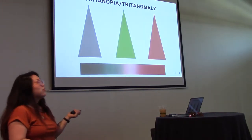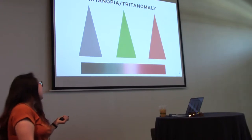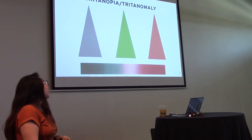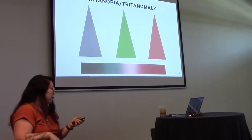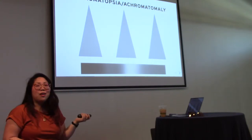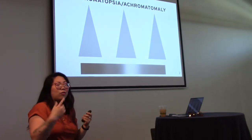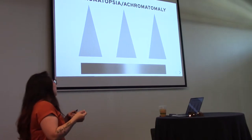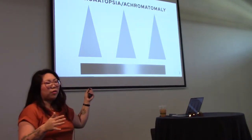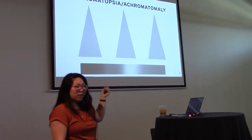Lastly we have tritanopia and tritanomaly. This is the malfunctioning of the blue cone cells. They result in a really interesting, and I think really lovely, visual color vision. It's pretty rare — less than 1% of the population. There is a final form of color blindness: achromatopsia and achromatomy. This is when all three different color cones are either not present or atypically functioning. It results in desaturated or completely grayscale vision. Usually this is also comorbid with a few other vision problems. Basically the rods are doing all the work and cone cells aren't contributing.